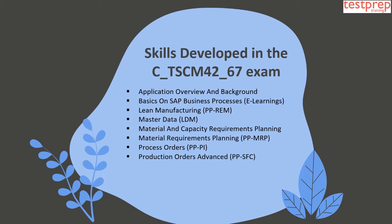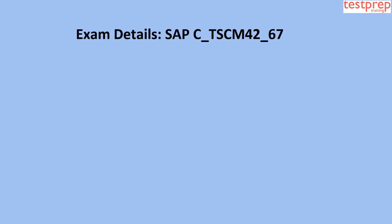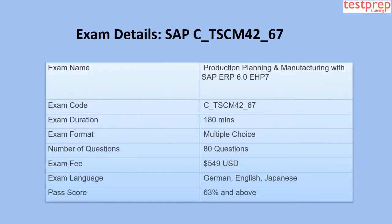Additional skill areas include: material and capacity requirements planning, material requirements planning PP-MRP, process orders PP-PI, production orders advanced PP-SFC, and production orders basics PP-SFC.